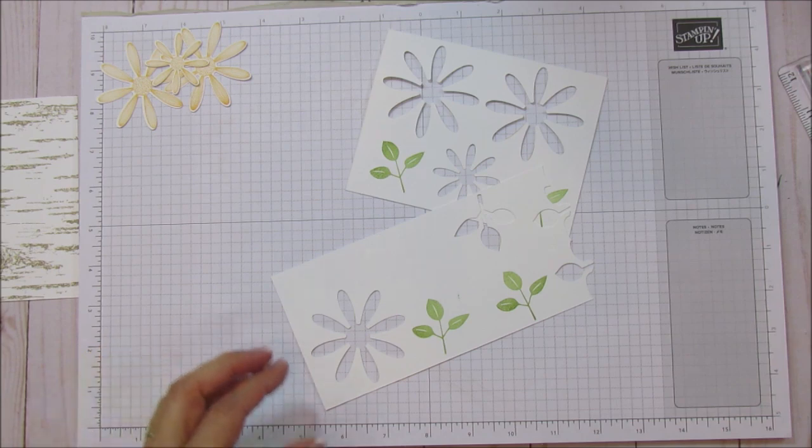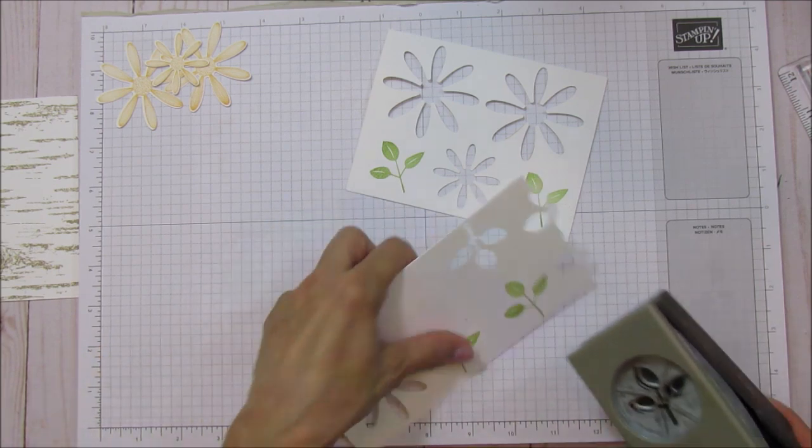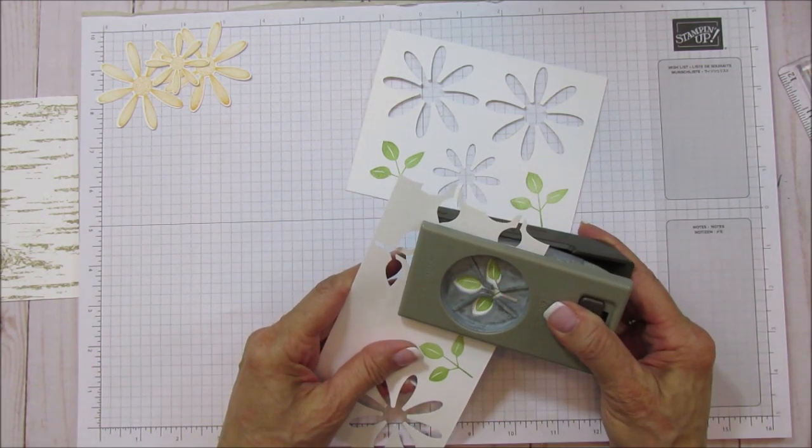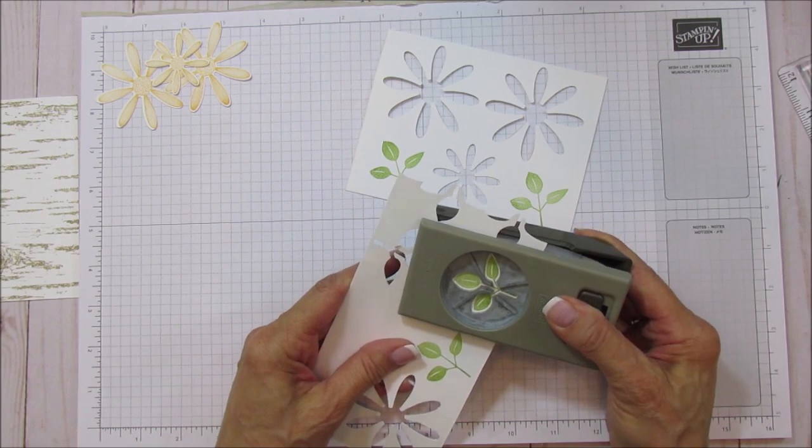Now we'll grab our leaf punch. So this is so easy because you are punching everything out. The only thing you're using the Big Shot for is your frame.